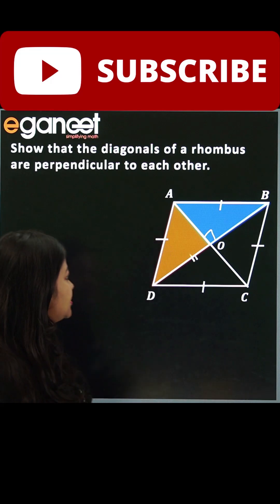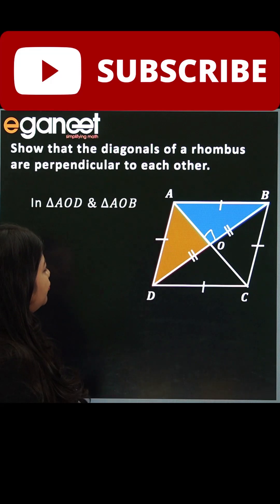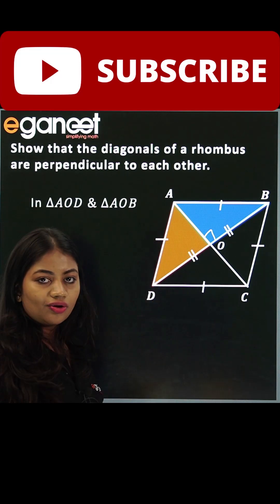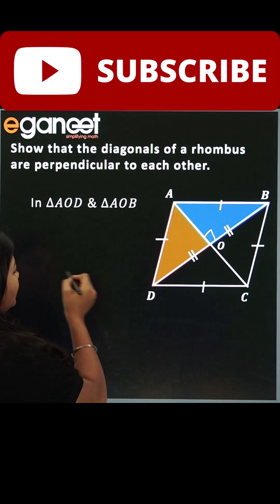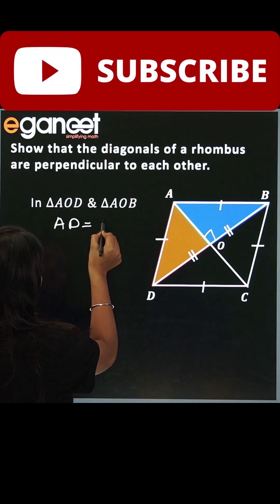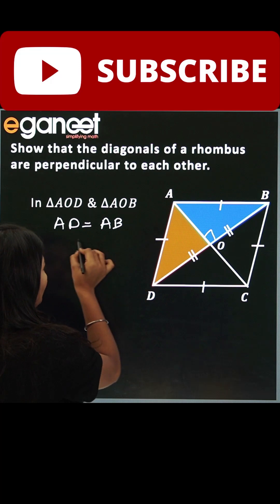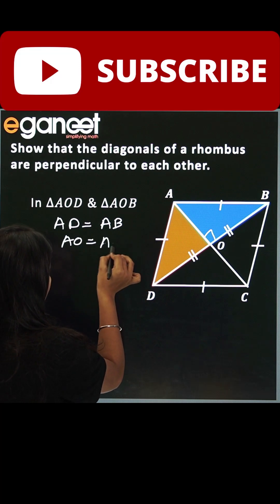Now since it's a rhombus, which means their sides will be equal, so AD will be equal to AB. Also, AO is the common side.